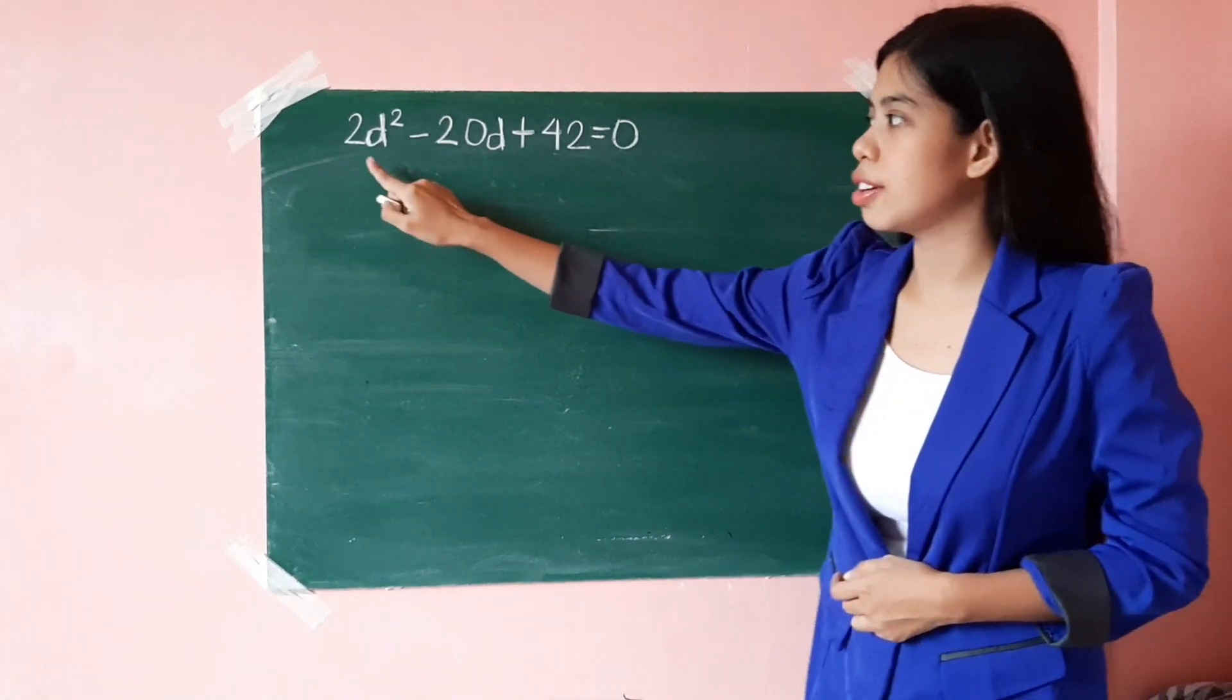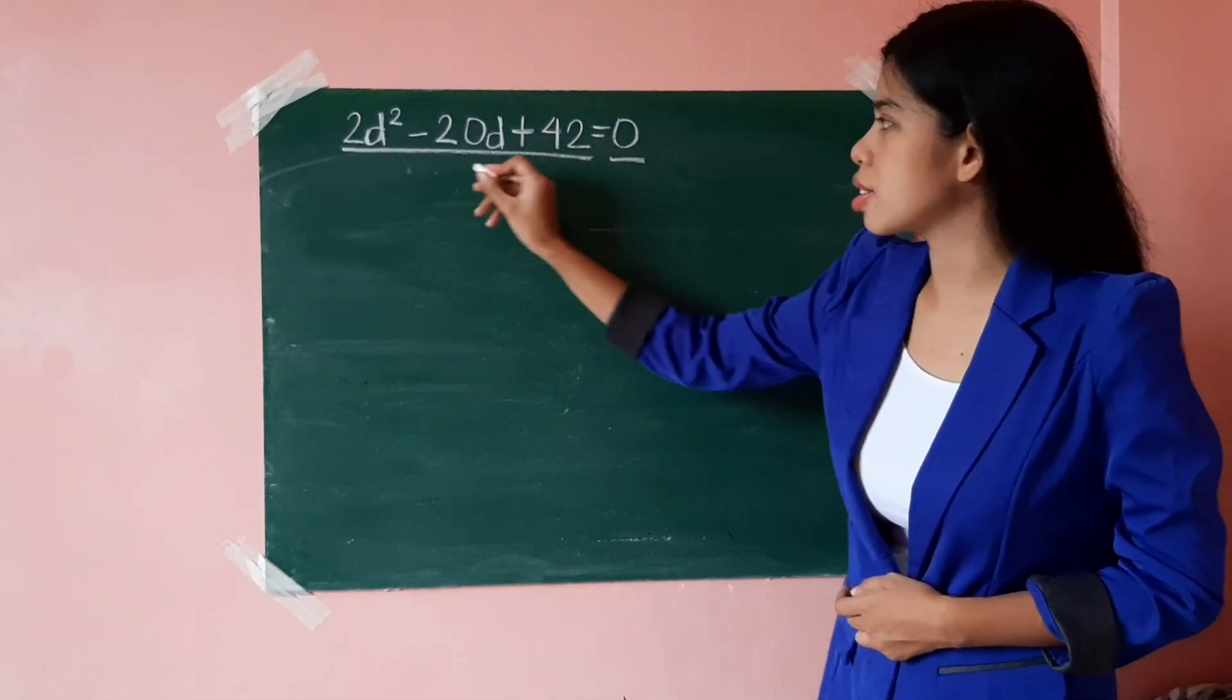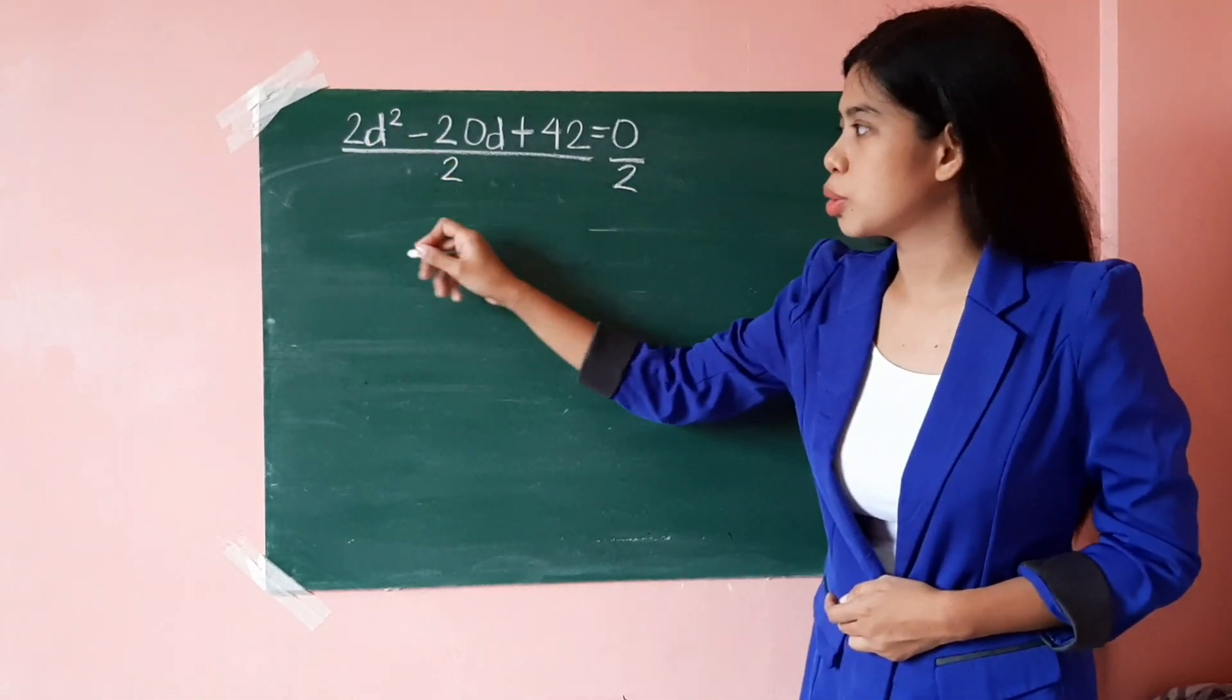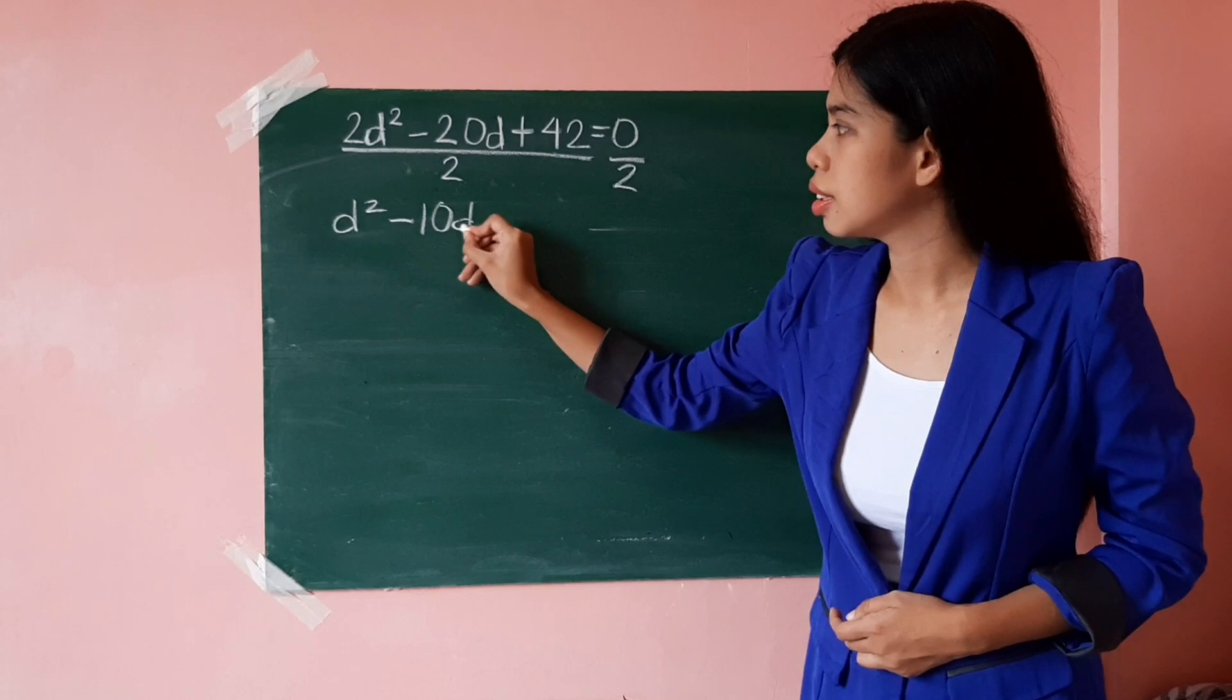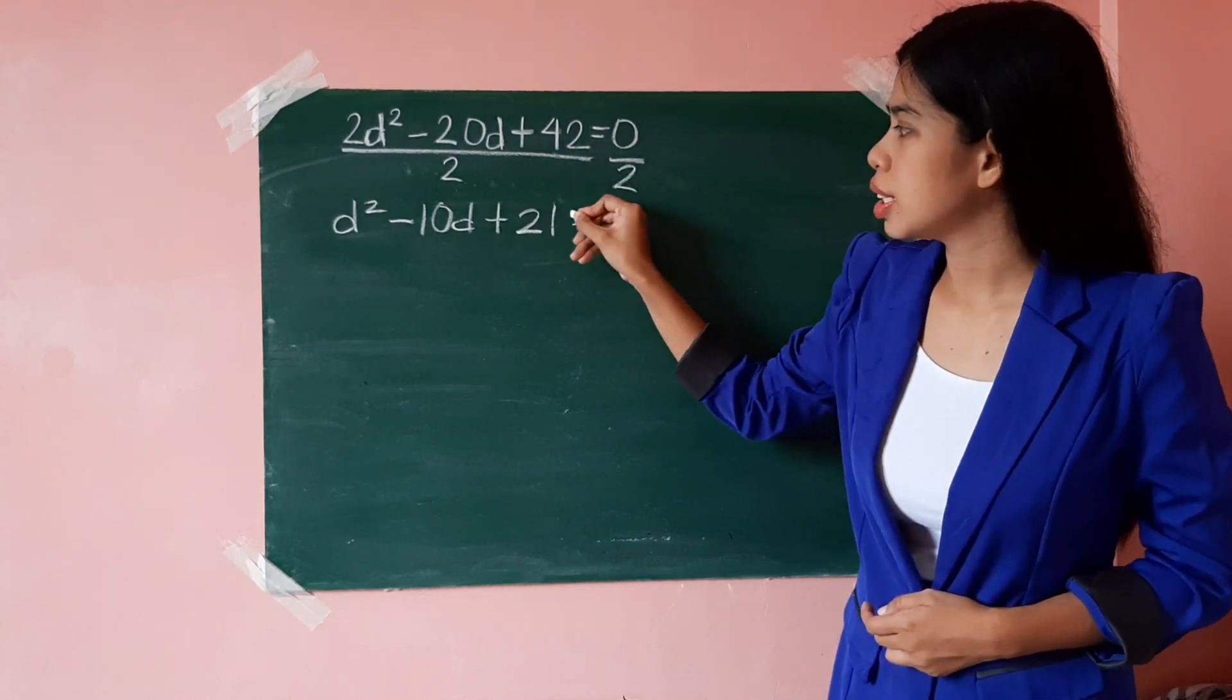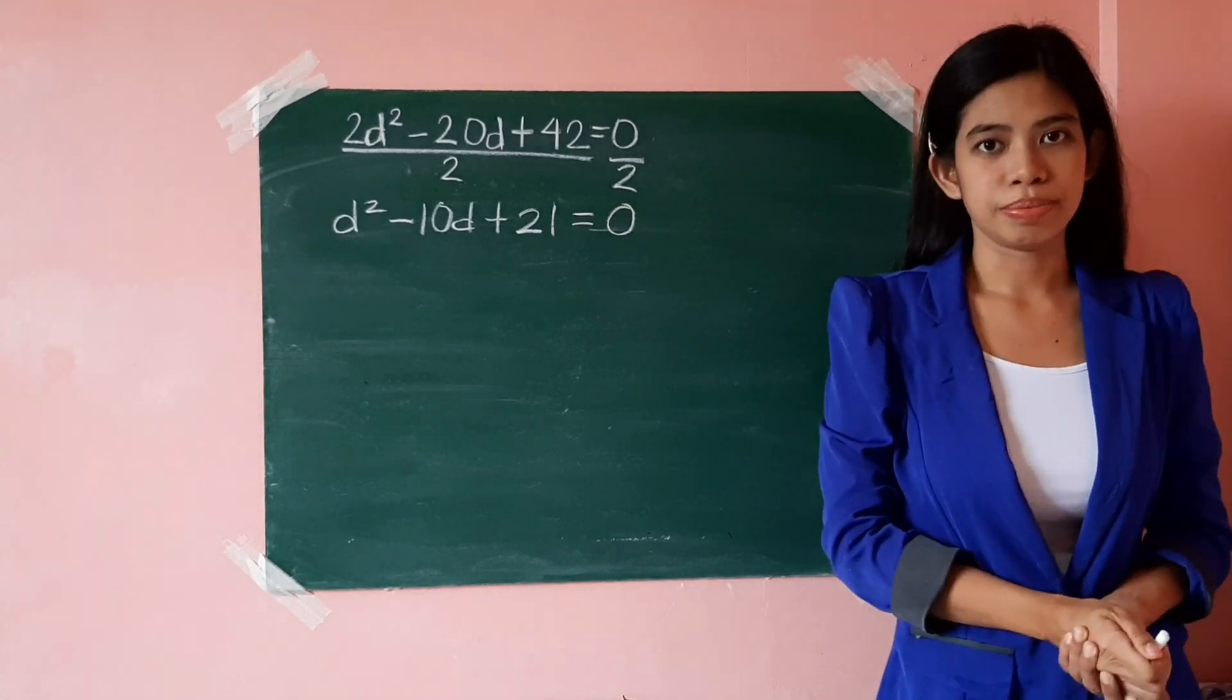Once again, the value of a is 2, so we have to divide both sides of the equation by 2. So, 2d² divided by 2, that's d², negative 10d, and positive 21 equals 0 divided by 2 is just 0. Alright?